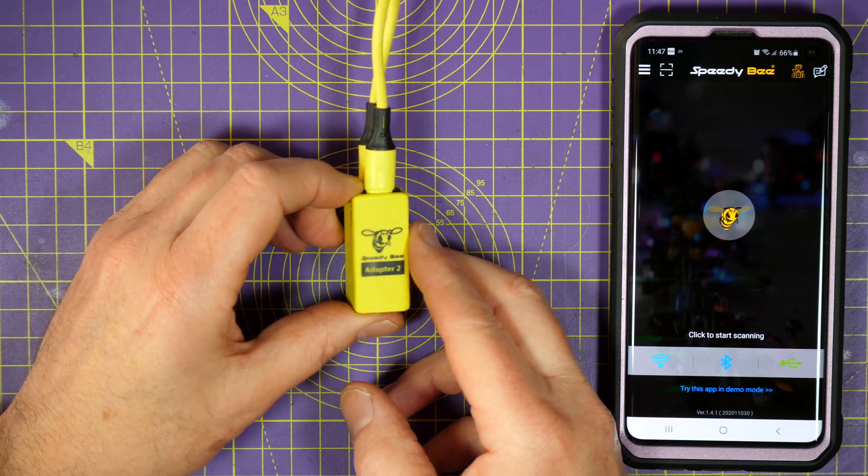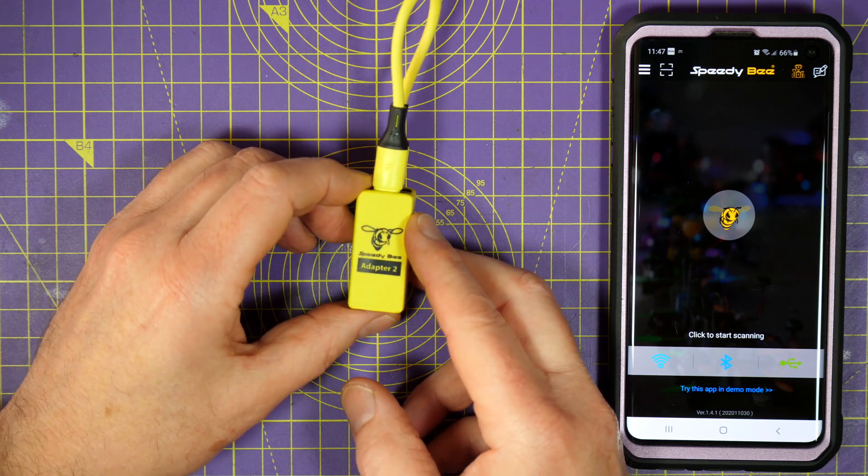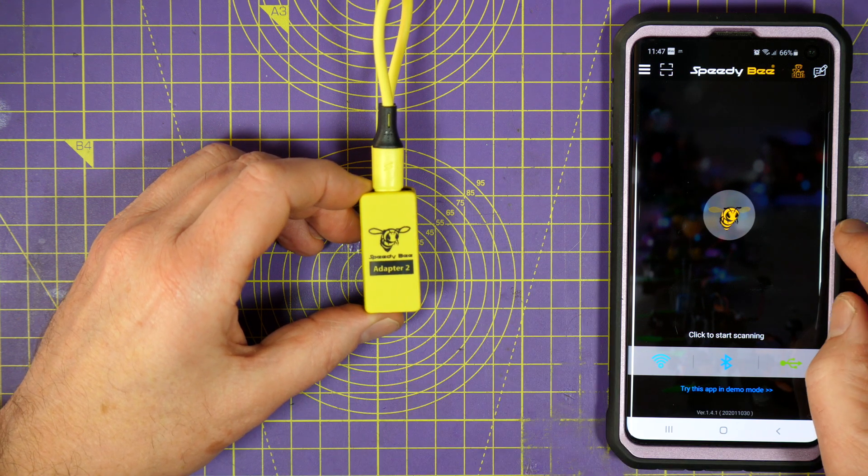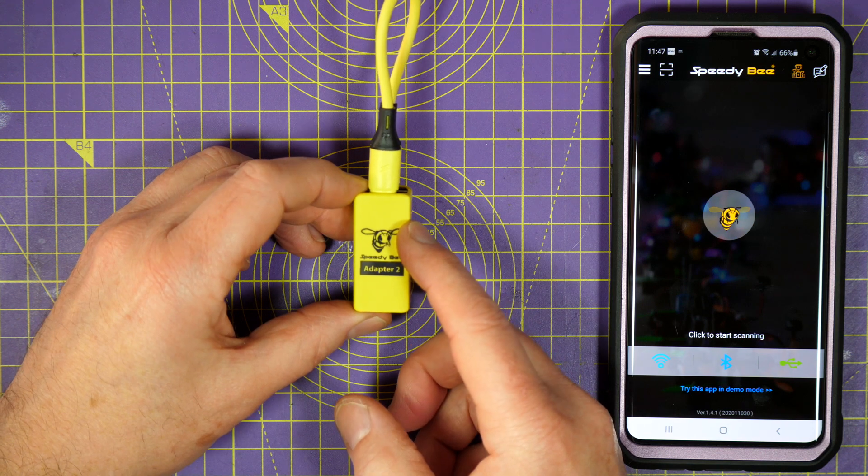It's basically a Wi-Fi dongle that you plug into any Betaflight, EmuFlight or INAV flight controller, so you can use the Speedybee app to set up the flight controller software over the air.